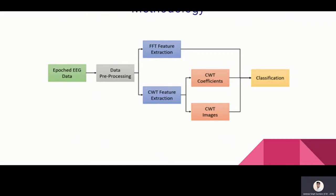So this we need to predict from our machine learning model. Now, what is the methodology which I've used? The Kaggle data is already epoch as I have shown you and I did the data pre-processing on it. Then I have applied two feature extraction methods: FFT, fast Fourier transform, and CWT, continuous wavelet transform. And then this CWT is again divided into two things: CWT coefficients and CWT images. And then I applied different classification methods.